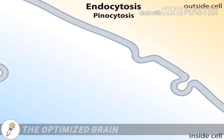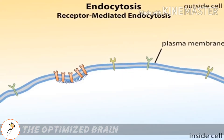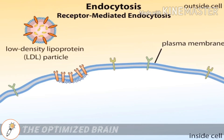A type of endocytosis called receptor-mediated endocytosis is used by animal cells to capture specific macromolecules from the cell's environment. For example, most mammalian cells use this method to take up cholesterol packaged in low density lipoprotein particles.